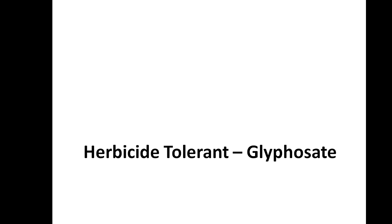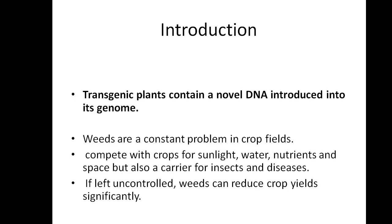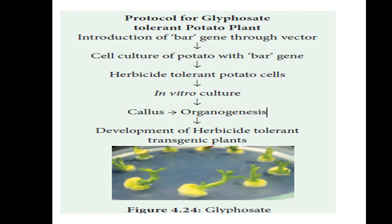There are two types of transgenic plants: herbicide tolerant and insect tolerant, and also virus resistant. First, I am going to explain herbicide tolerant, which is glyphosate tolerance. This involves introduction of a BAR gene through a vector. The BAR gene is inserted into the vector, and this gene has the tendency to give resistance to the glyphosate herbicide.